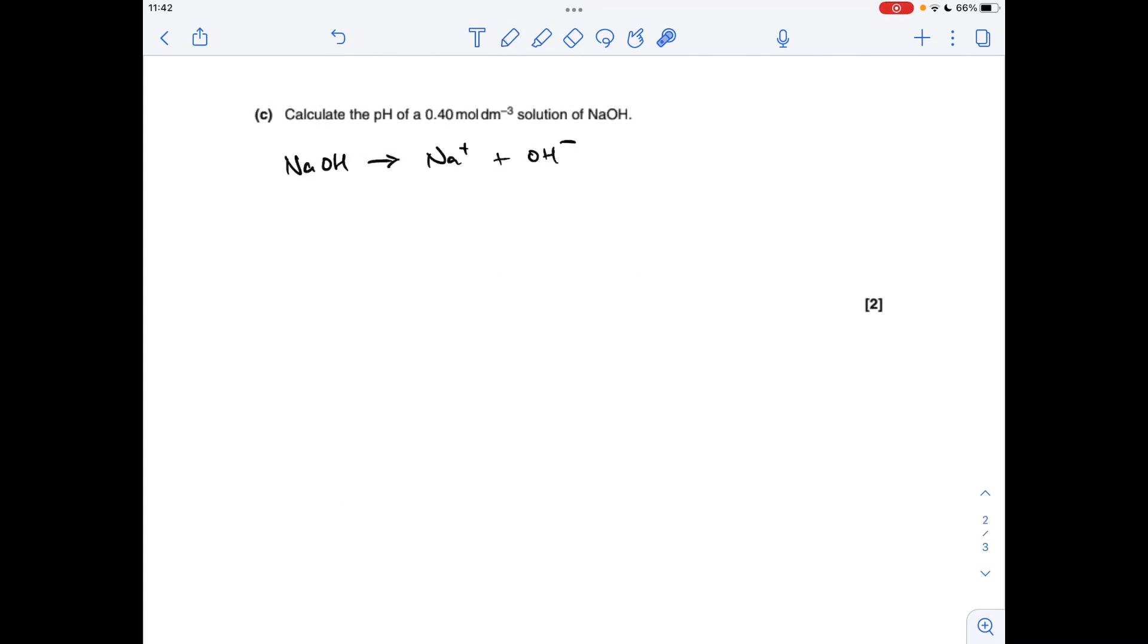Okay, so last part, we've got to calculate the pH of this concentration of sodium hydroxide solution. So I've just written up the dissociation equation for that. It's a strong alkali, so it fully dissociates. This is 0.4 moles per decimeter cubed, and from the dissociation, you can see that the concentration of OH minus ions will also be 0.4 moles per decimeter cubed.